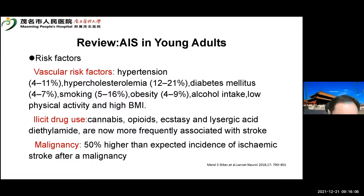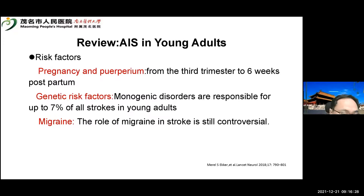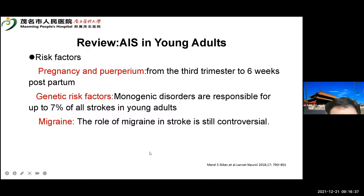Now let's look at the risk factors. Risk factors in young adults include vascular risk factors, malignancy, illicit drug use, pregnancy and puerperal period, and genetic risk factors. Regarding migraine, the role of migraine in stroke is still controversial.